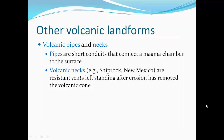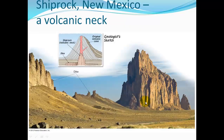Volcanic pipes and necks: pipes are short conduits that connect the magma chamber to the surface. If the magma solidifies in the pipe and the rock around that pipe gets eroded away, you're left with a volcanic neck like Shiprock, New Mexico — the resistant core left standing after the rest of the volcano has been eroded away.